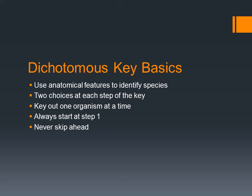At each step of the dichotomous key, there are two choices. You read the two choices, you decide which one best describes the species you're trying to key out, and then you follow the directions that it says on that step.